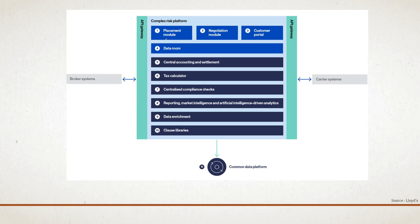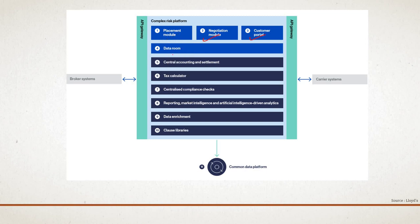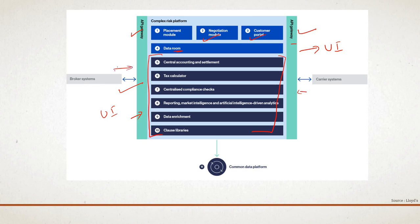This is the interesting overall diagram for the complex risk platform. Within it we have a new placement module, a negotiation module, a customer portal, and a data room. These are supported by common services. The platform can be accessed through API gateways or via its own UI. Brokers can connect to the complex risk platform through APIs or the UI, and carriers can access it through the API gateway. An API — Application Programming Interface — allows two systems to interact with each other.